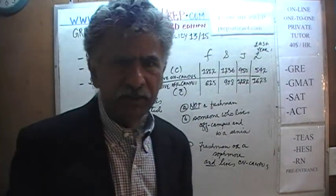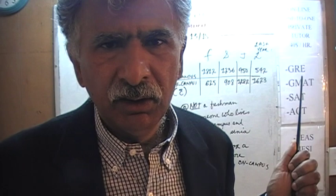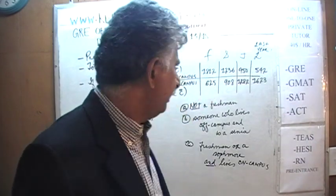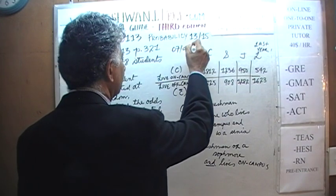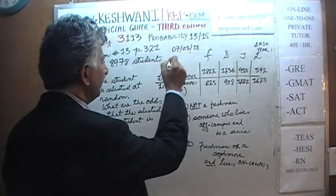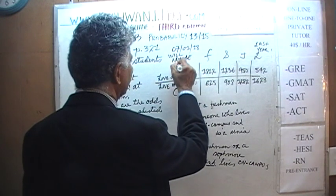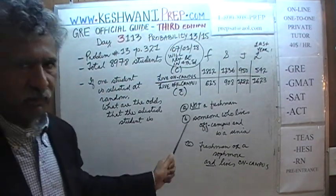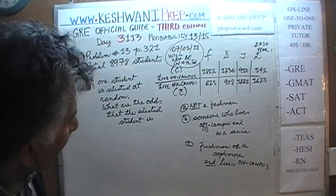Somebody did not do a good job in my opinion. This is not the sort of thing that typically appears in the GRE, because the purpose of the GRE is not to see how quickly you can crunch numbers. The purpose is simply to see that you understand the concept. Today as I speak — July 1st, 2018 — I guarantee you that this problem will not be in the fourth edition. When the fourth edition comes out, this problem will be taken out. But at this point we have no choice, we have to answer it.